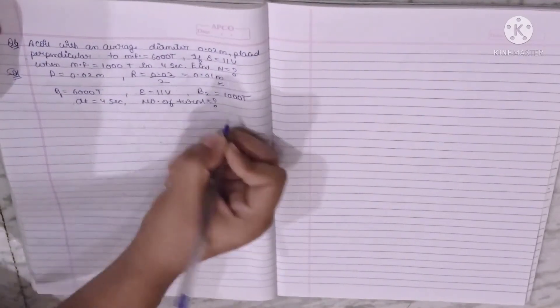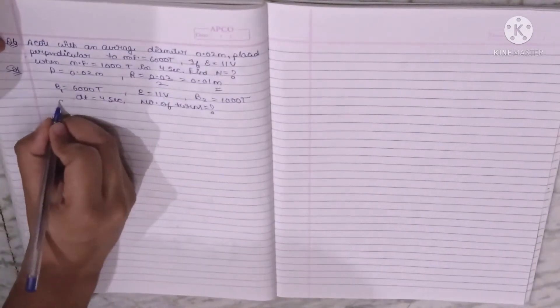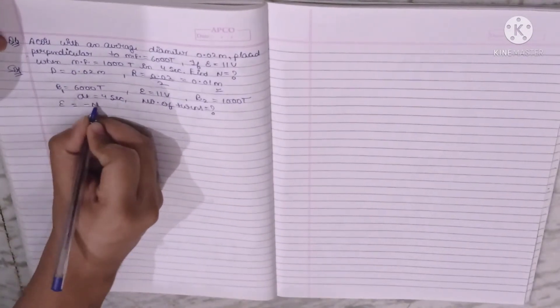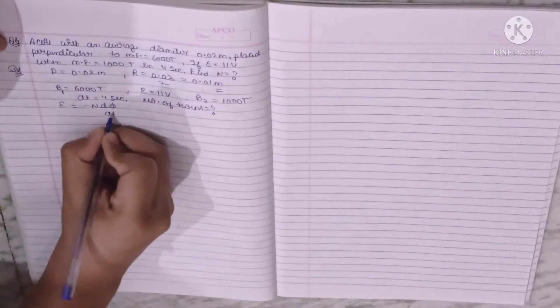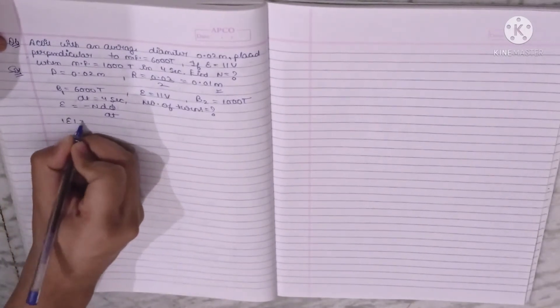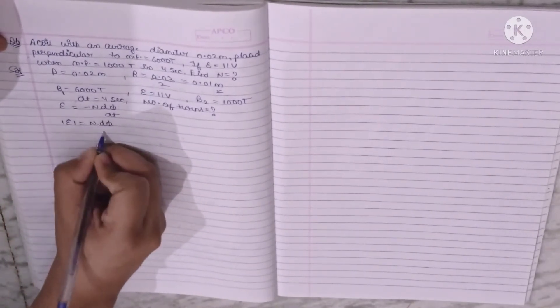And placed perpendicular to magnetic field. Number of turns we will find out. So we know our formula is that EMF is equal to minus N d phi by dt. So we have to write the magnitude of EMF, then EMF is equal to N d phi by dt.